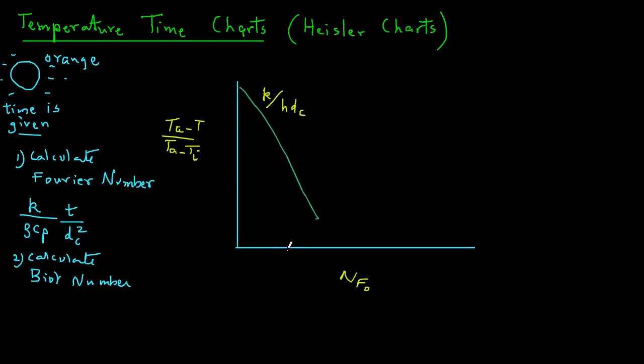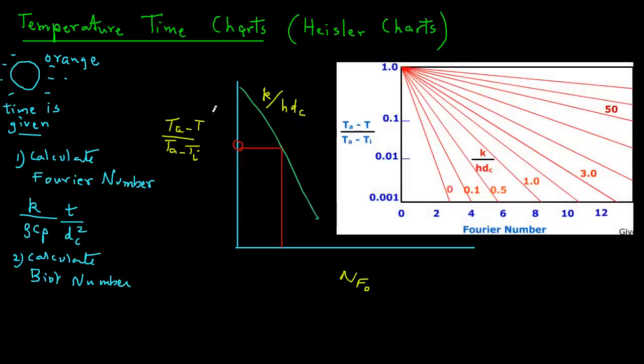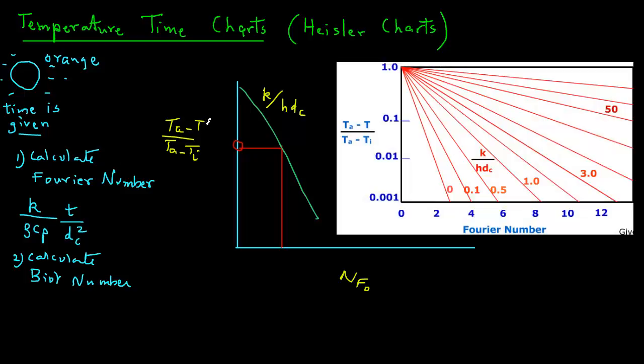On this temperature time chart, we can identify the point on the x-axis that represents the Fourier number and also the line that represents the inverse of the Biot number. Then we can draw the line from the Fourier number to the inverse of the Biot number line, see where they cross and then from there go towards left hand side and see where it will intersect the y-axis.